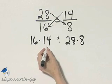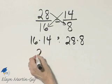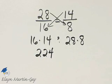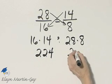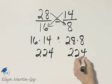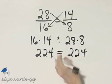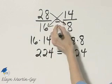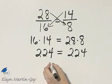If you multiply 16 times 14, that is 224. If you multiply 28 times 8, that happens to also be 224. So these two numbers are equal, which means these two are equal, which means that is a true proportion.